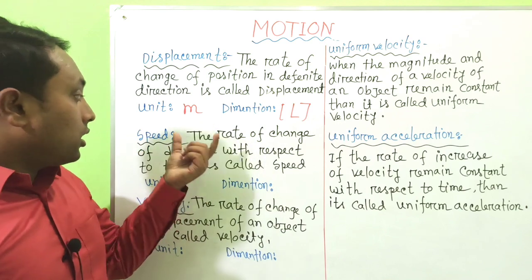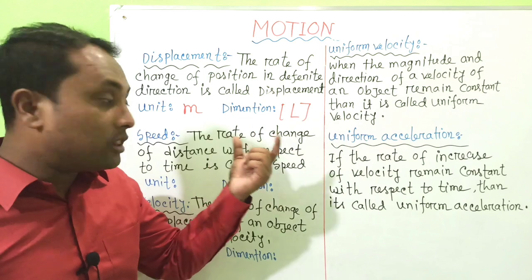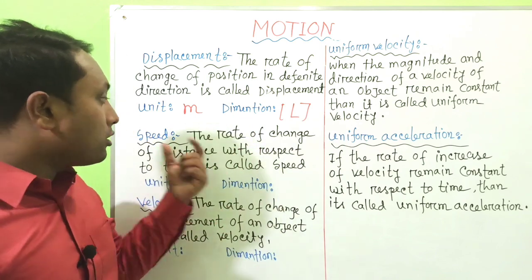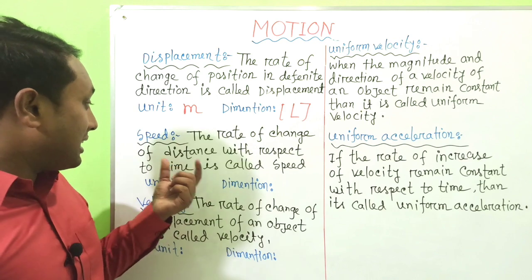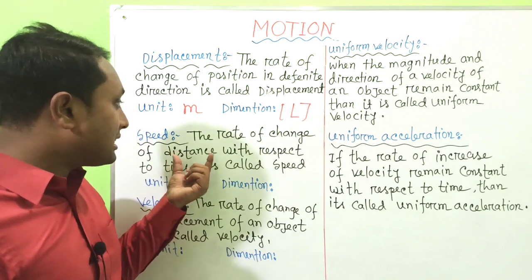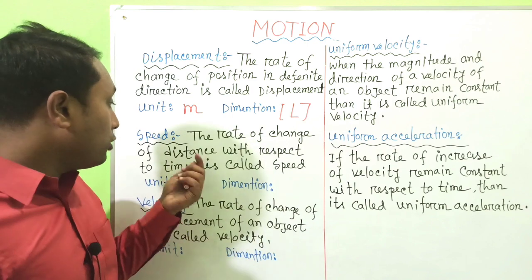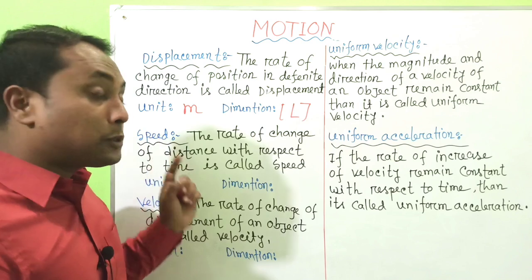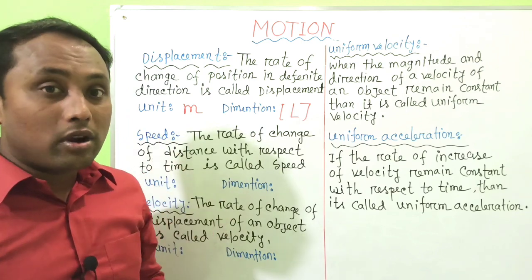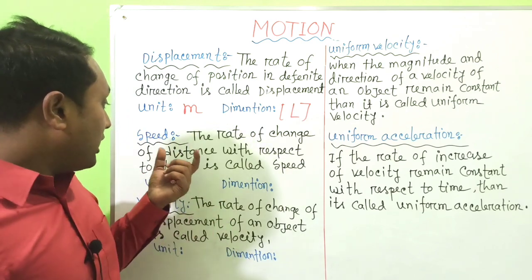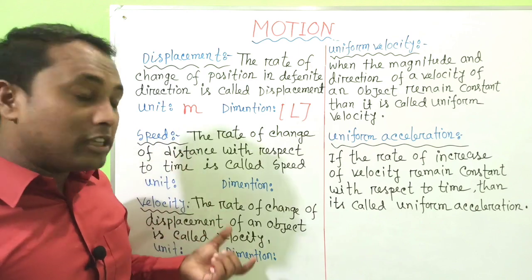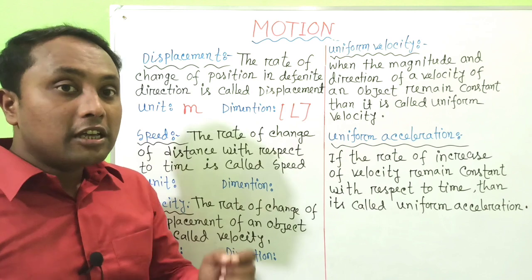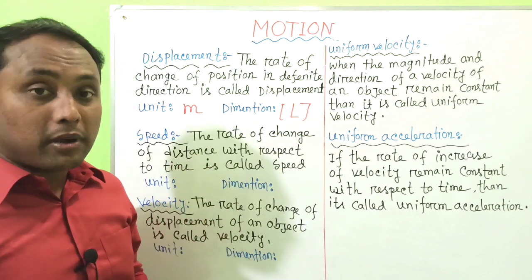The next one is Speed. The rate of change of distance with respect to time is called speed. Speed basically depends on distance and time. Since distance is a scalar quantity, speed is also a scalar quantity. We can calculate speed using the equation: speed = distance divided by time.